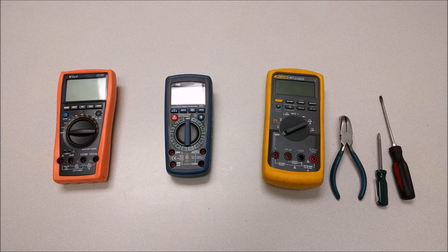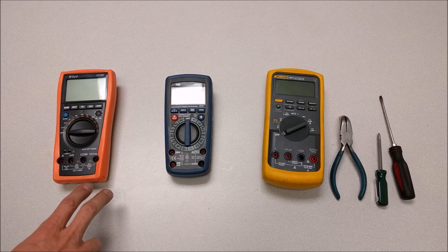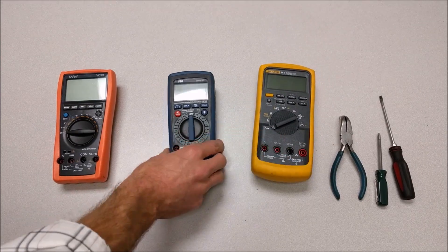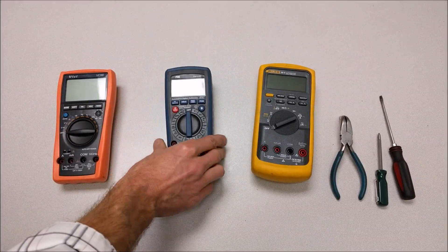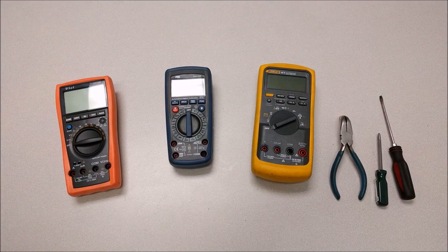So now I'm going to take just a minute and show you how to change the fuses in your multimeter. I've got three meters here that I'm going to use as examples. I've got a Fluke 88V, a PDI DM930, and a VC99. So we'll start with the Fluke.